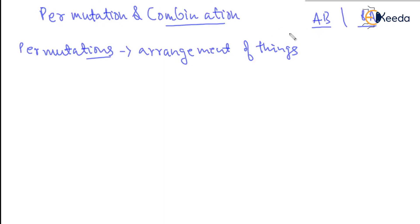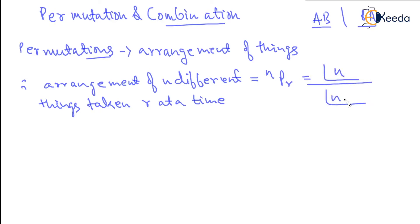It is not only about grouping them. Arrangement of n different things taken r at a time is given by nPr, which is factorial n by factorial n minus r.